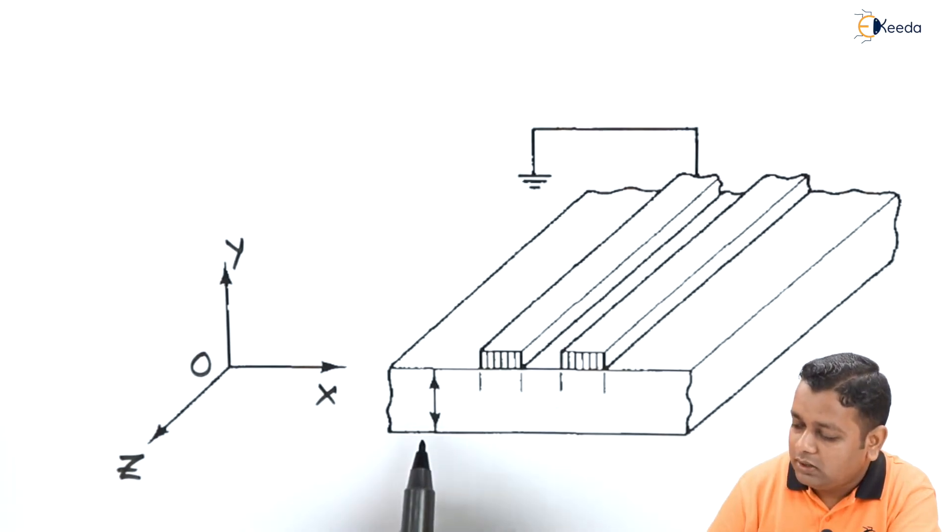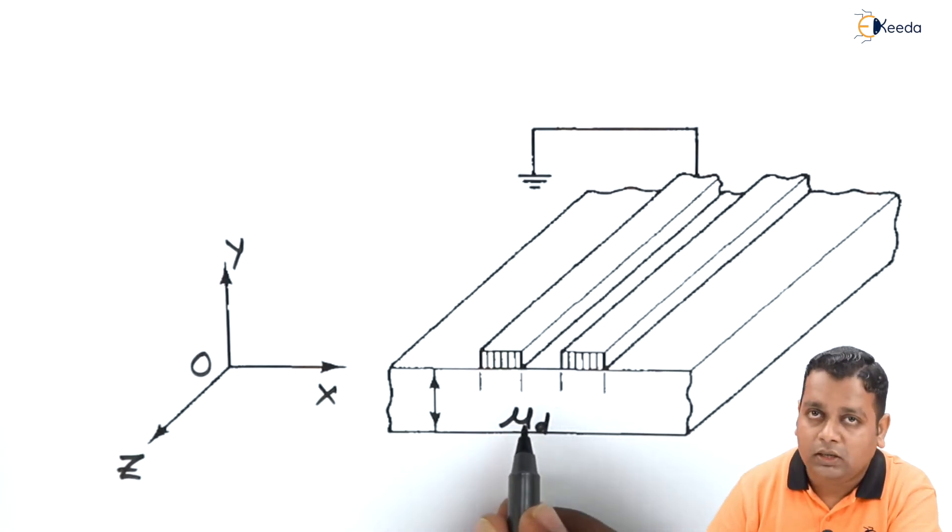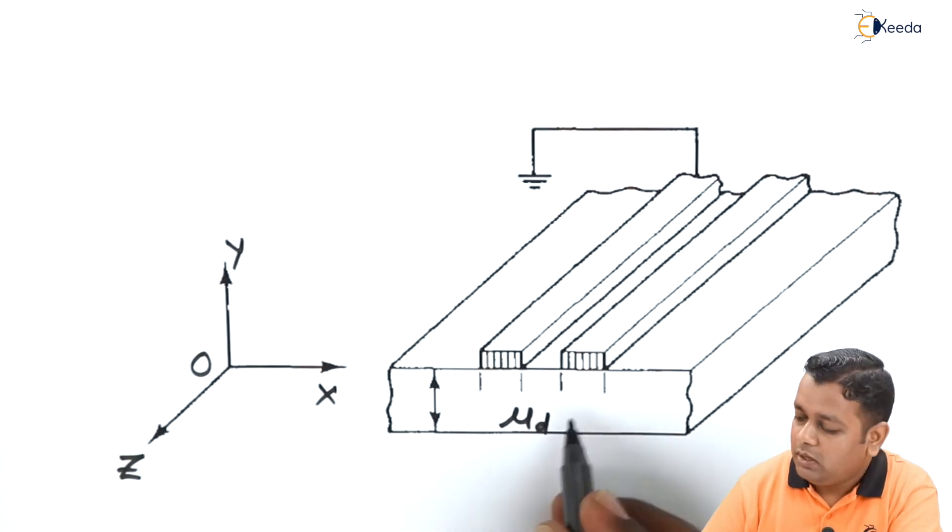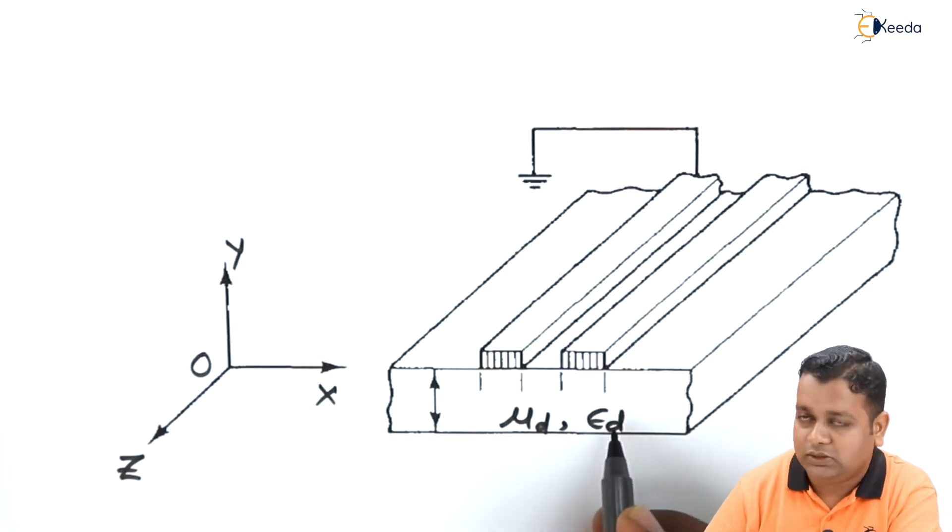For the dielectric substrate, we have the permeability denoted by mu subscript d, d for dielectric material. If it would be mu subscript c, it is for the conductive region, whereas the permittivity is represented as epsilon subscript d.